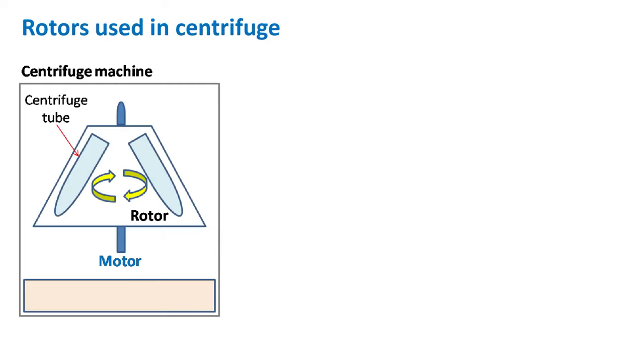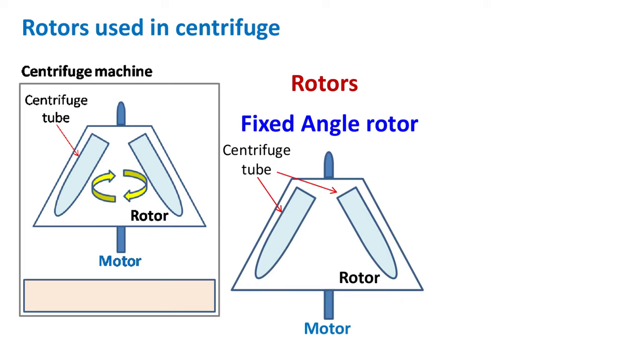Now let's talk about the rotors used in centrifuge. The rotors used in centrifuge are mostly of three types. First, fixed angle rotors. As the name suggests, these rotors will hold the tube at a fixed angle which is usually 45 degrees.